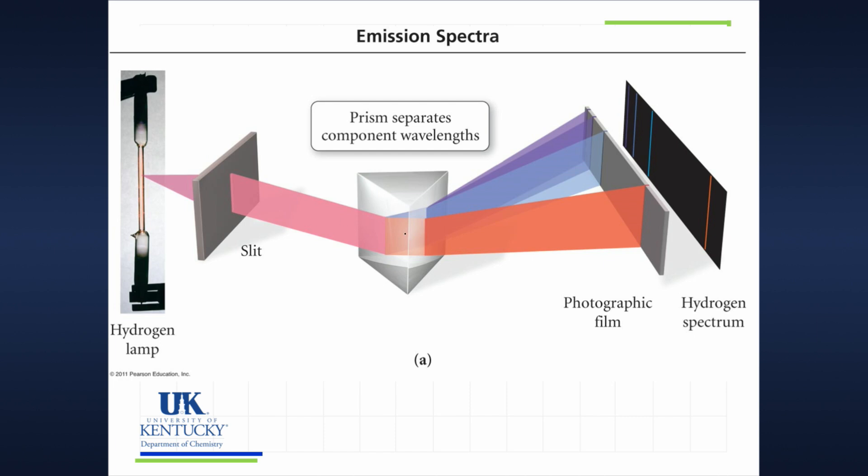That produced light is going to pass through a little slit. It's going to be focused into a prism. The prism will separate out those wavelengths. Now here is what happens with hydrogen. You do not see all the colors of the rainbow there. You only see very discrete lines.